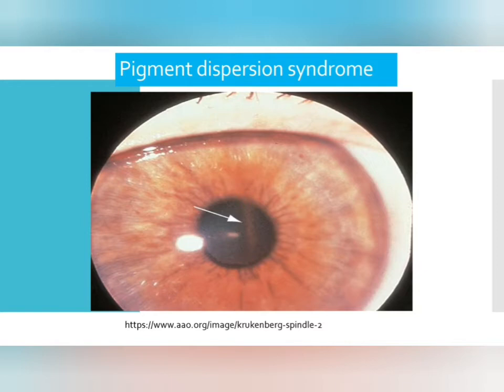Pigment dispersion syndrome is a condition where pigment from the iris deposits into the aqueous humor, flows out with it, and gets stuck on the trabecular meshwork. In infants and young people there is no pigmentation, but with age a gradual amount can appear. Normally, pigmentation is more in the inferior quadrant due to gravitational force. In pigment dispersion syndrome, pigmentation is abnormally present in the superior quadrant as well as nasal and temporal — this is not seen in normal cases.